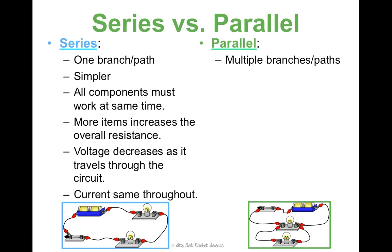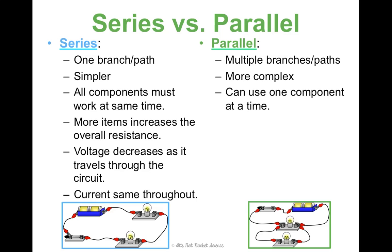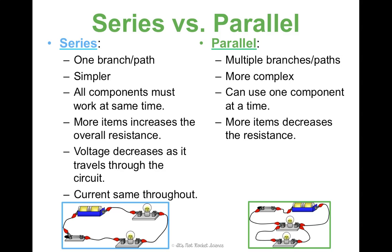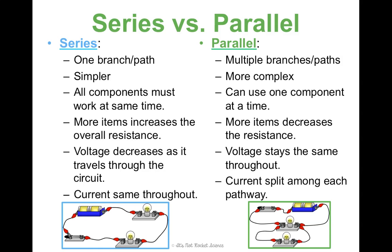In a parallel circuit, there are multiple branches or pathways, so it's going to be more complex. But the nice thing is that you can use one component at a time — one of these light bulbs can be on and one can be off; they both can be on, they both can be off, it doesn't matter. The more items you add to a parallel circuit, it actually decreases the resistance because there are more pathways for the electrons to travel through. Voltage stays the same throughout, and current is split among each pathway.